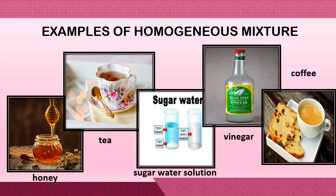They are made up of different kinds of materials, but you cannot recognize them anymore. For example, coffee is made up of coffee granules, creamer, and water. As you can see in the coffee, you cannot recognize the coffee granules and the creamer anymore because they are distributed uniformly. Even though they are made up of liquid and solid, if you stir them well, they can have only one phase because they are uniformly distributed.